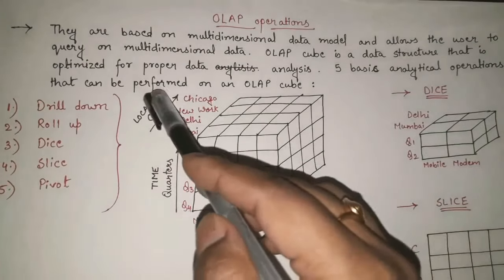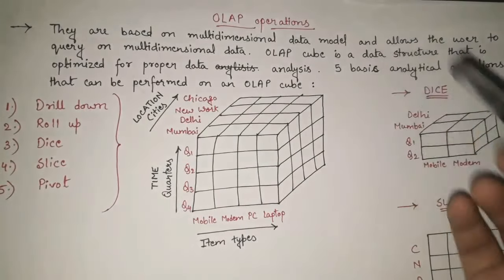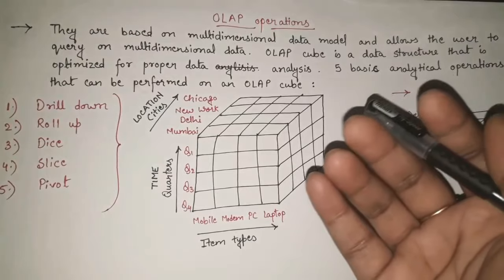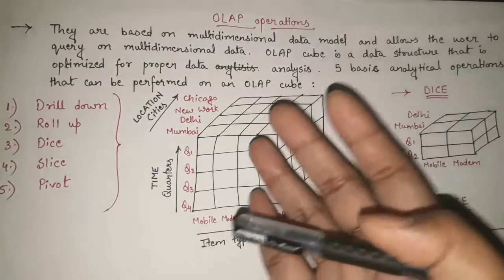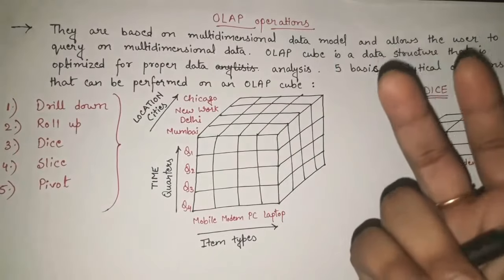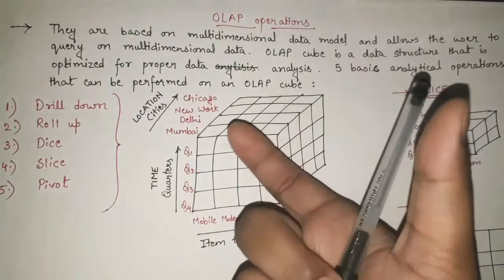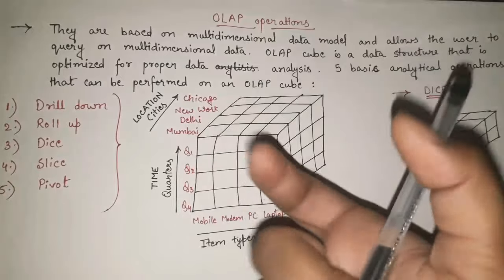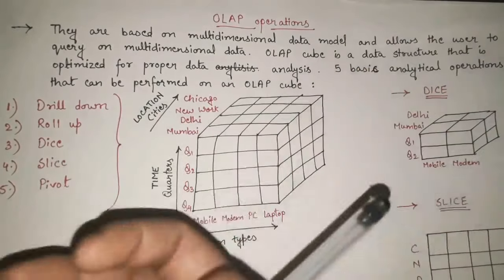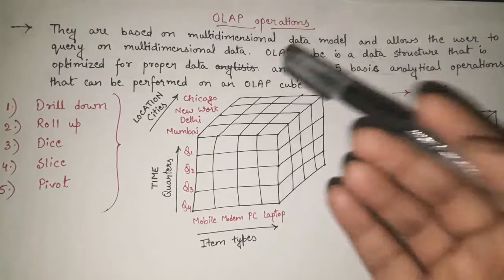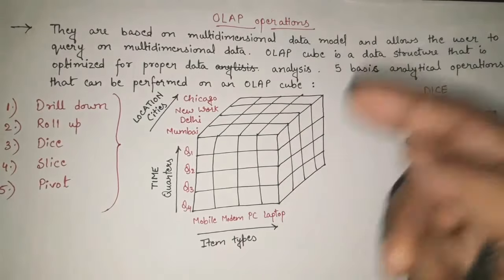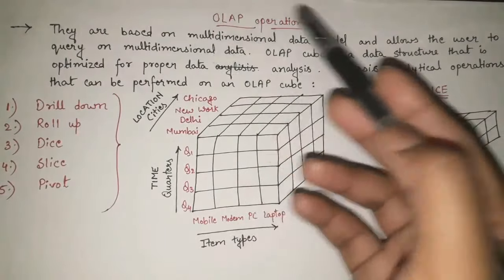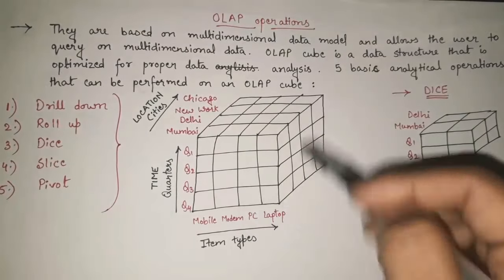An OLAP cube is a data structure that is optimized for proper data analysis. OLAP stands for Online Analytical Processing — we take a huge amount of historical or existing data, analyze it, observe it, and based on the analysis we provide results to queries. So OLAP is all about processing queries and providing results based on analysis.